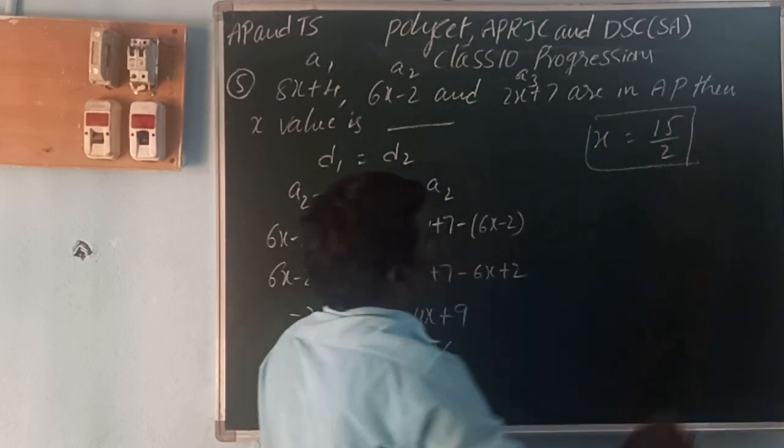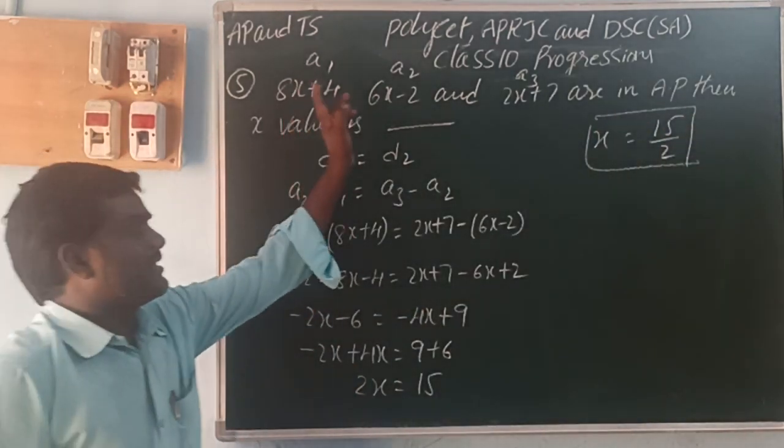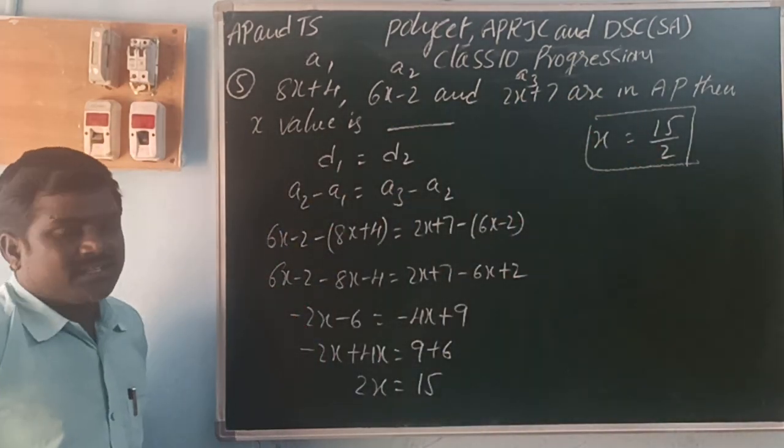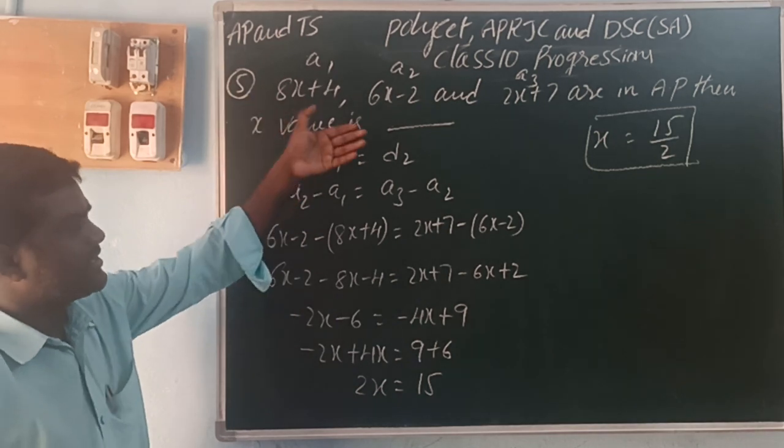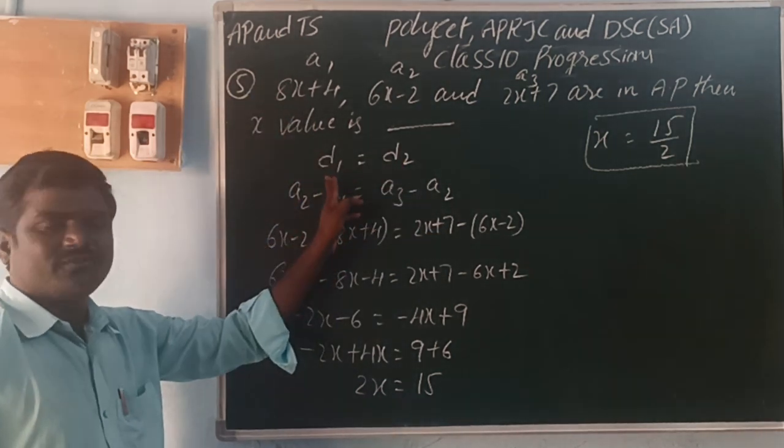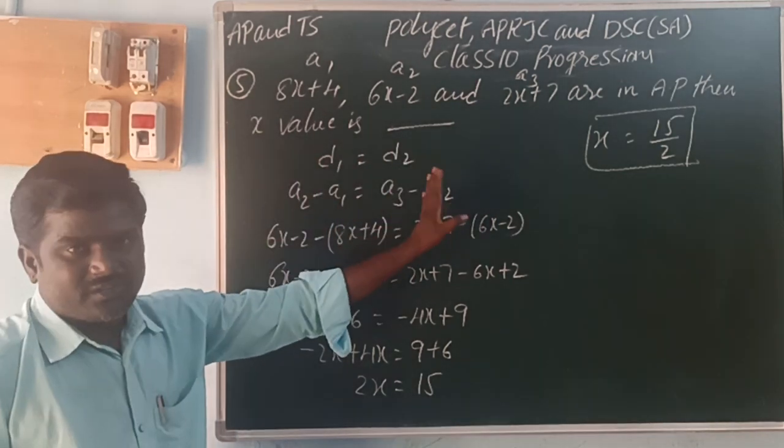-2X - 6 = -4X + 9. -2X + 4X = 2X. 9 + 6 = 15. 2X = 15. X = 15 by 2. The X value is 15/2. These three terms are in AP when X value is 15/2.